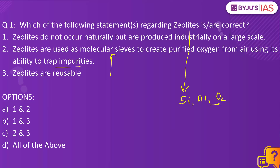These zeolites do occur naturally. For example, natural zeolites are formed where volcanic rocks and ash layers react with groundwater, and that groundwater is alkaline. So zeolites are found naturally, but at the same time they are also produced industrially on a large scale.